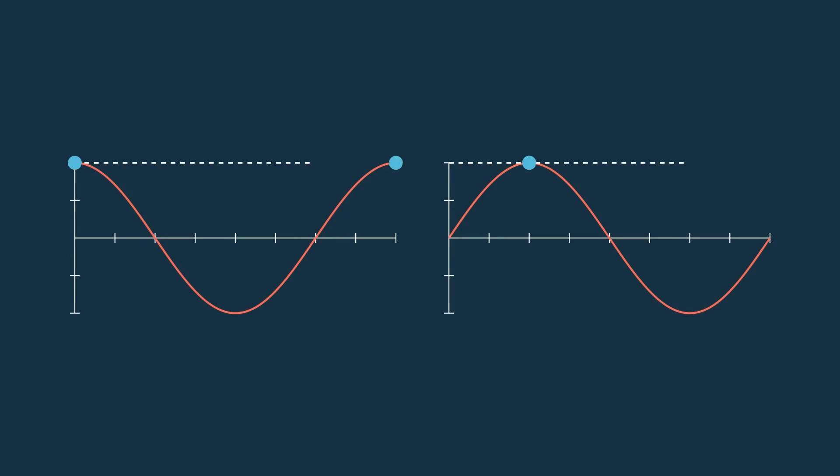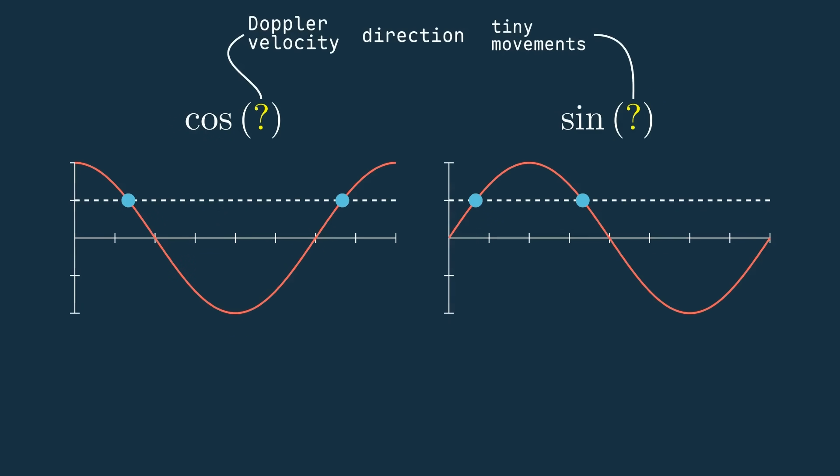Say we sample these signals and get an output of 0.5, so this y value right here. What you see is that this y value could correspond to one of two possible inputs on the cosine plot, pi over 3 and 5 pi over 3, and two possible inputs on the sine plot, pi over 6 and 5 pi over 6. And having two possible inputs for a single output goes for any output value of a cosine or sine function. 0.5 is just an example. This means we can't determine the input phase of the received cosine wave and we lose the information it holds, the velocity, direction, and small movements.